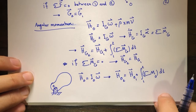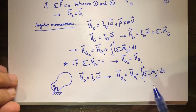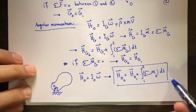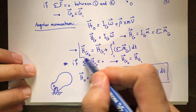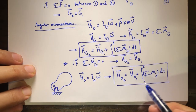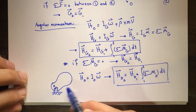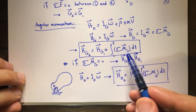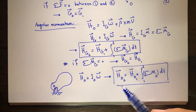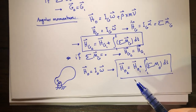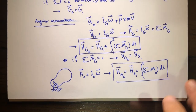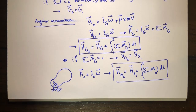So the general equations — the H_G and H_O equations — are always true, though the H_O fixed-point form applies specifically when O is a fixed point of the rigid body. Now I'm going to show you how these equations work and how they help us solve complicated problems with a few examples.